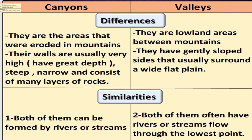Imagine being in the canyon between two mountains and looking at the two sides - the two walls are very high. The walls of canyons are very high because canyons are very deep. The Grand Canyon contains two walls or mountains on two sides that contain many layers of rock. The canyon has very high walls, and these walls contain many layers of rocks.